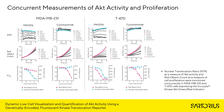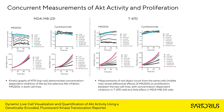Next, we'll look at how we can make concurrent measurements of AKT activity and proliferation using the Incusite system. Nuclear translocation ratio as a measure of AKT activity and red object count as a measure of cell proliferation were monitored concurrently in MDA-MB231 and T47D breast cancer cell lines expressing the Incusite kinase indicator. Kinetic graphs of NTR demonstrate concentration-dependent inhibition of AKT by the selective AKT inhibitor MK2206 in both cell lines.